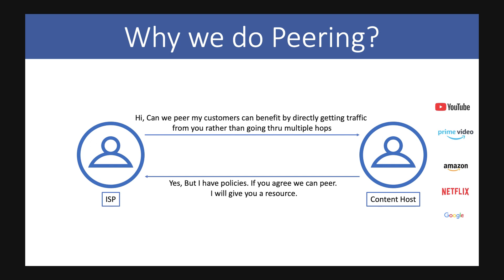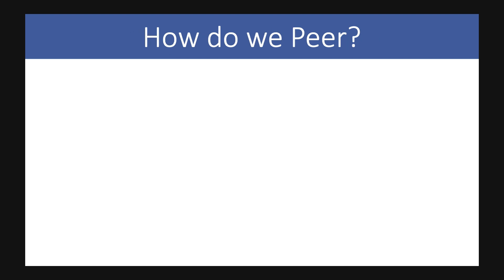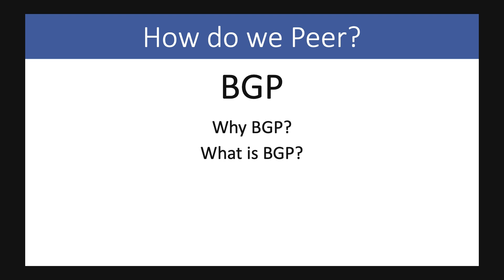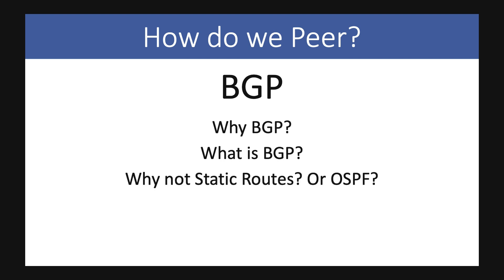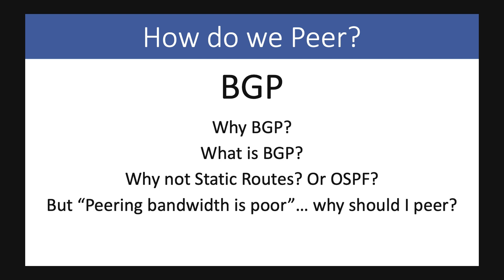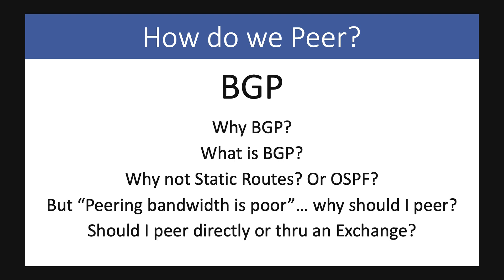When you peer with a content provider there are policies you must adhere to before they give you access to their resources. We peer through BGP. Why BGP? Why can't we peer through static routes or OSPF, which are simpler? The question also keeps coming up: peering bandwidth is poor — why should I peer? And should I peer directly or through an exchange? We'll answer each of these questions step by step.